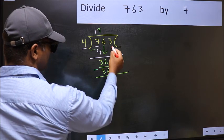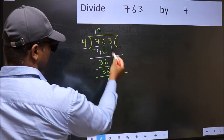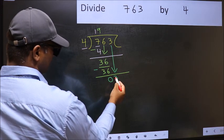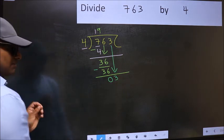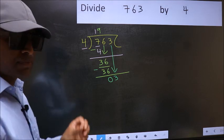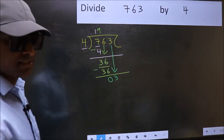After this, bring down the beside number. So 3 down. After this step, the mistake happens. And the mistake is this.